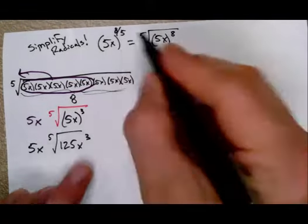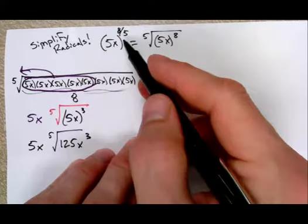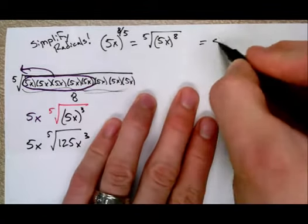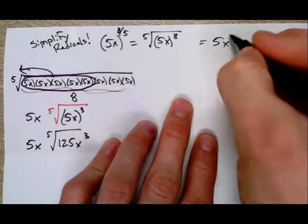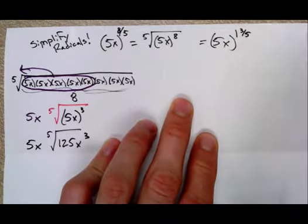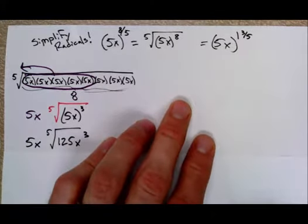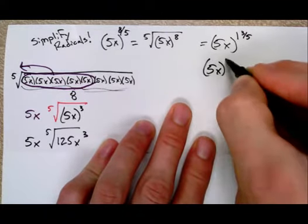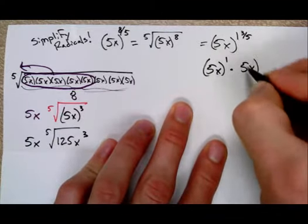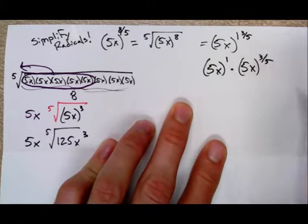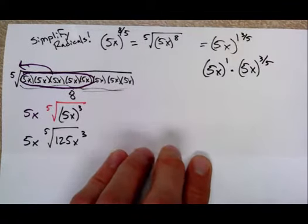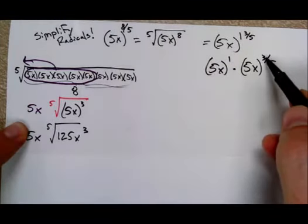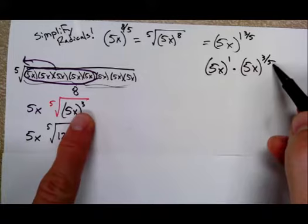Now, another way to do it would be to think of this improper fraction and think of it as a mixed number. And so you could write this as 5x all to the 1 and 3 5ths, which we almost never do except for this one scenario. Because then this would be 5x to the 1st times 5x to the 3 5ths if you use your laws of exponents. Well, right there, now I've already got my 5x that was sitting out front, and I've got the 3rd power of that 5th root.